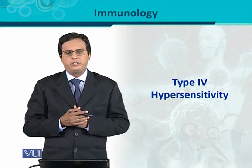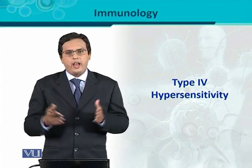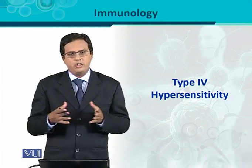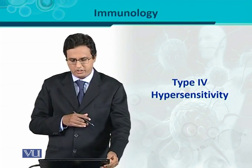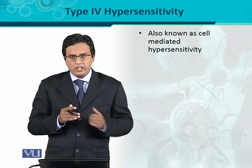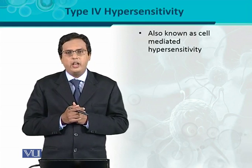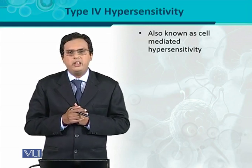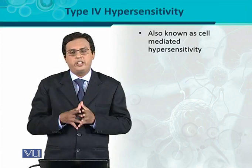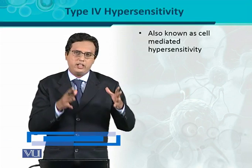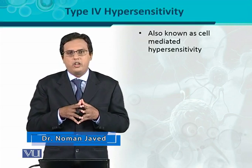Type 4 hypersensitivity reactions are those kinds of reactions in which there is an exaggerated, or overreaction, of the immune system. The fourth type is also called cell-mediated hypersensitivity. As the name suggests, in this kind of hypersensitivity reaction, cell-to-cell interaction is very important, and the cell-mediated immune response generates this reaction.